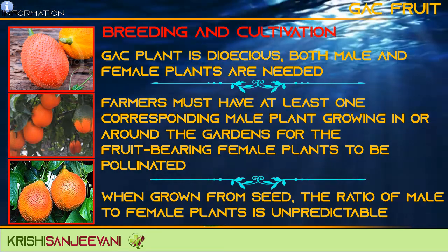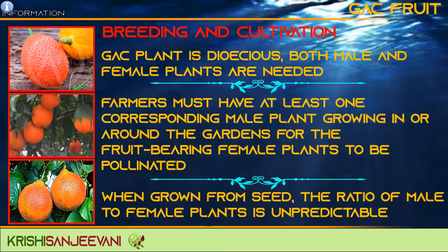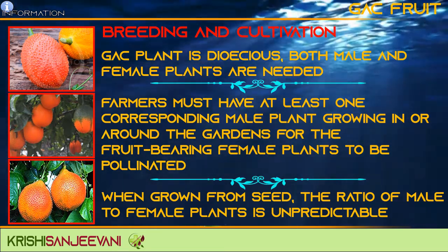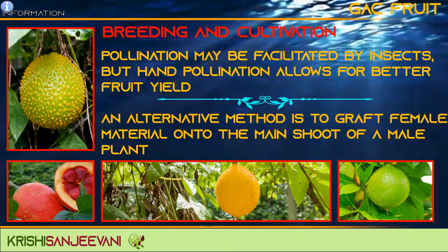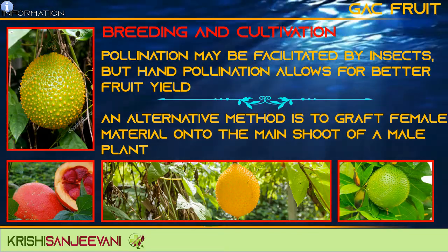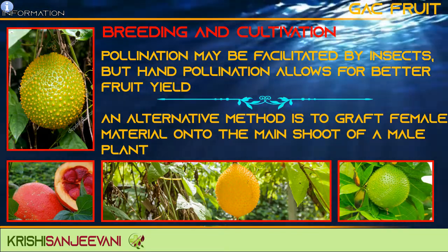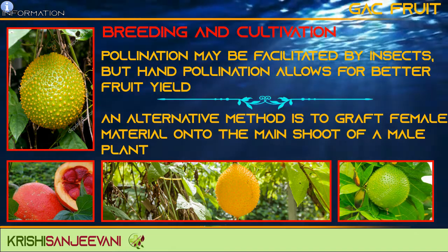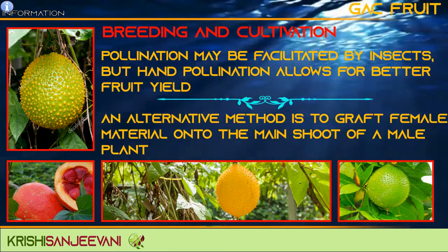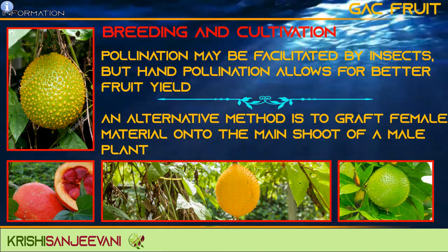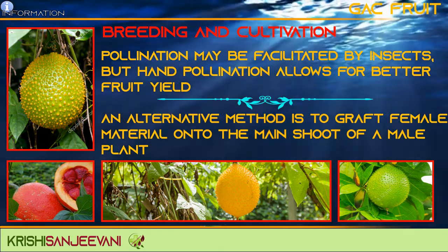When grown from seed, the ratio of male to female plants is unpredictable. Pollination may be facilitated by insects, but hand pollination allows for better fruit yield. An alternative method is to graft female material onto the main shoot of a male plant.